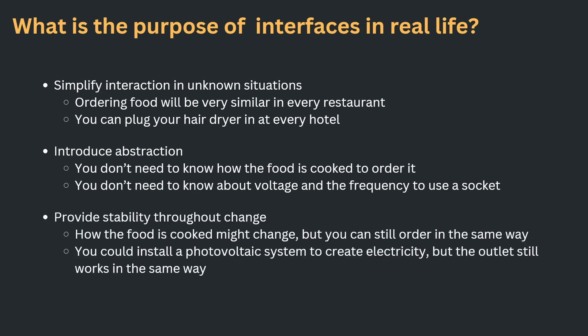Looking to the next capability of interfaces: they provide stability throughout change. How the food is cooked might actually change, but you can still order in the same way. The chef might change, even the same chef might change his recipe — it doesn't matter. Ordering a butter chicken is still the very same process that you knew from years ago. And also, you could install a photovoltaic system to create your own electricity, but the outlet would still work in the same way as it did when you got the electricity from a power plant nearby.